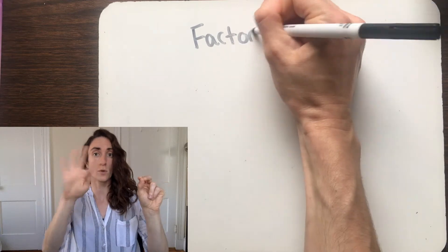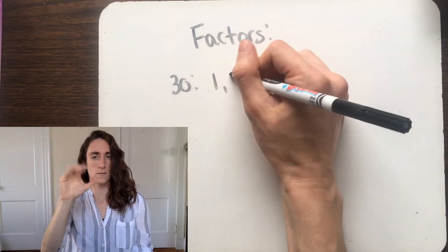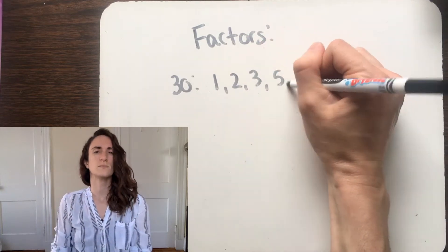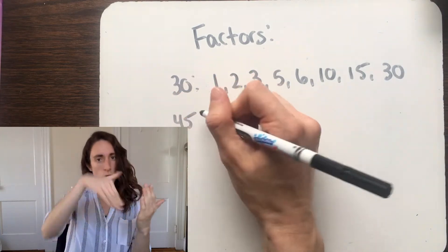Okay, suppose I have two numbers, 30 and 45, and I want to know what is the greatest common factor that the two of them have. First of all, what does that mean? So, let's list out all the factors of 30 and 45.